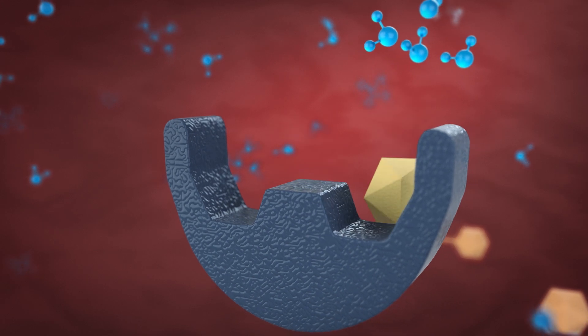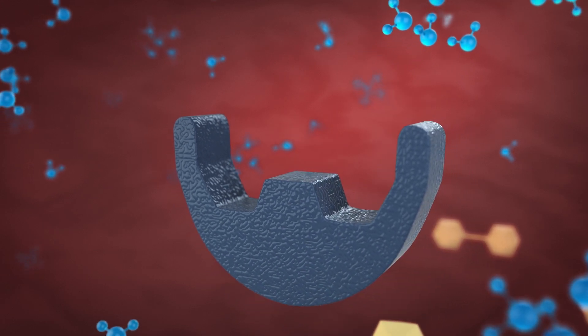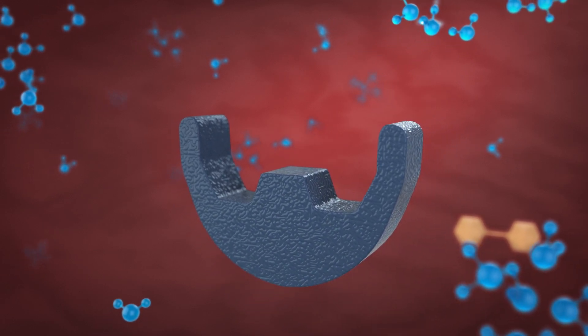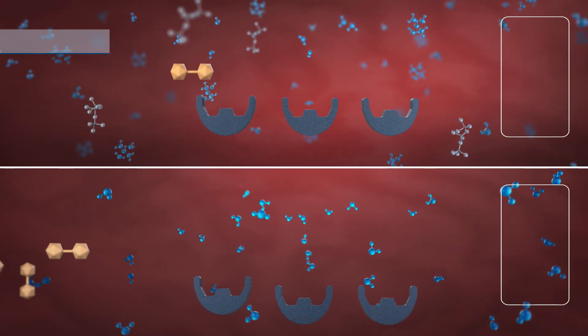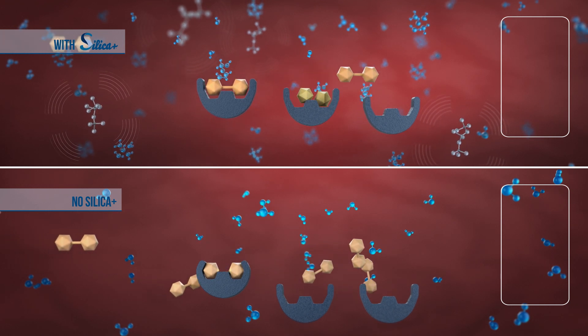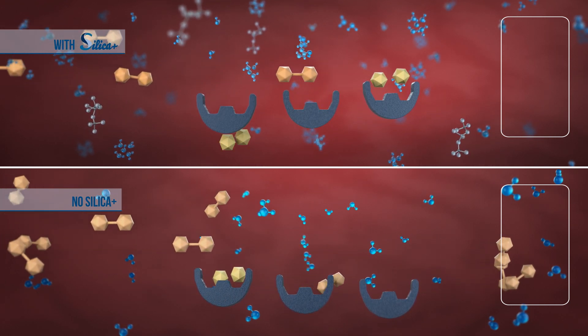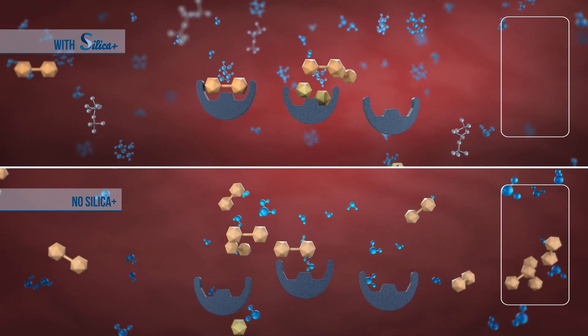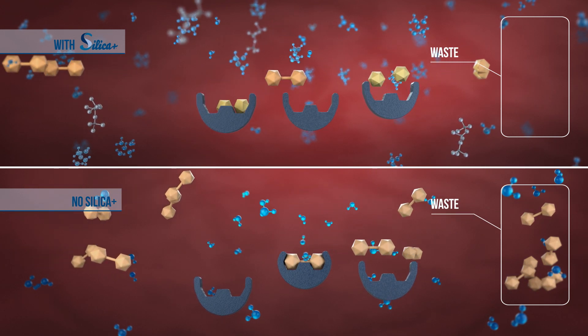The amino acids can now be absorbed in the bloodstream and the enzyme is regenerated to act on a new substrate. The quicker this reaction occurs, the more proteins the enzyme can split up. By increasing the speed of the reaction, Silica Plus allows more protein to be digested and less protein is lost as waste.